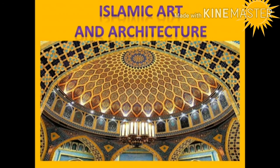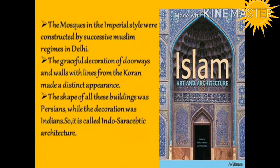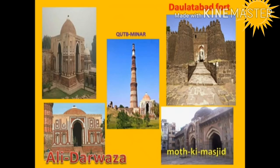We will now see Islamic art and architecture. The mausoleums of high-ranking Muslim nobles, soldiers, and officials were built first, and around them mosques and imperial stables were constructed by successive Muslim rulers. Mosques and madrasas looked architecturally distinct. The graceful decoration of doorways and walls with lines from the Quran gave these buildings a distinct appearance. The shape of these buildings was Persian while the decoration was Indian — this style is called Indo-Saracenic architecture. Notable examples include the Qutb Minar, Alai Darwaza, Quwwat-ul-Islam Masjid, Moti Masjid, tombs of Iltutmish and Balban, and the forts of Daulatabad and Firozabad.